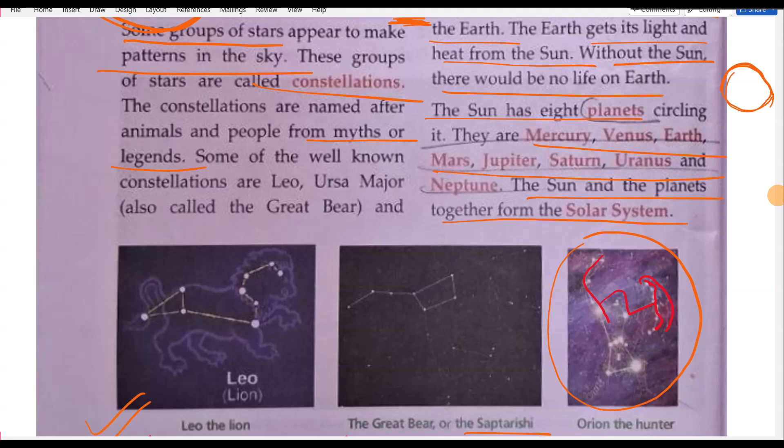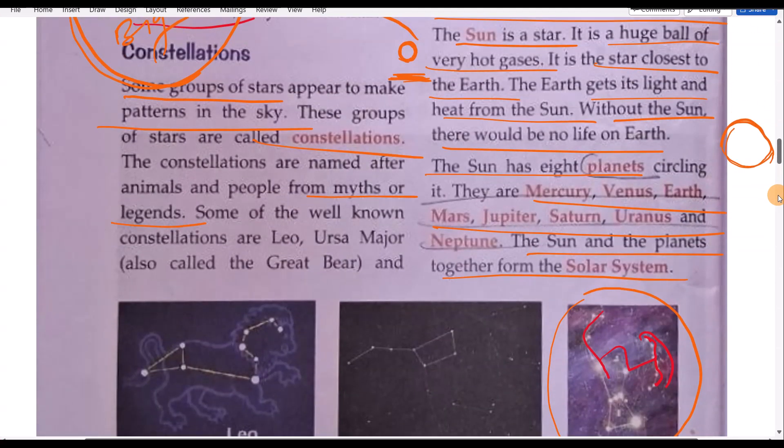And in this solar system, here is both star also and planet also. These must be learned with spelling. Very important for exam purpose.